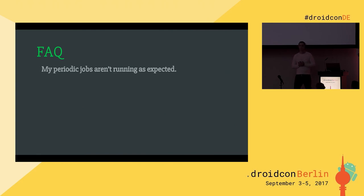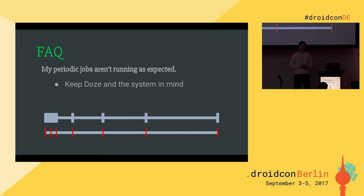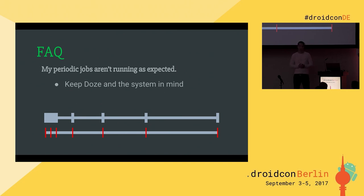My periodic jobs aren't running as expected. The reason is you always should keep the system in mind — the library isn't fighting the system, it tries to be nice to the user. For example, if you schedule a periodic job with an interval of 50 minutes and expect it to run exactly every 50 minutes, this won't happen. If the device goes into Doze mode your job will be delayed and run either in a maintenance window or when the device leaves Doze mode — so you could have a delay of one or two hours. If you really require your job to run every 50 minutes, you should reconsider your requirements, because stopping Doze mode wastes a lot of battery for the user.